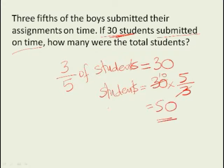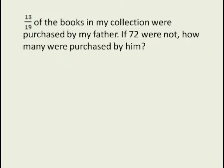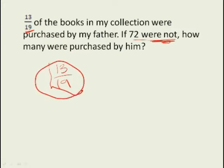13 by 19 of the books in my collection were purchased by my father. If 72 were not, how many were purchased by him? So what is the remaining fraction out of these 13 by 19? As we have done in the previous videos, if one of the things is 13 by 19, then the remaining fraction is 19 minus 13, that is 6 by 19. That's how you calculate the remaining part of the fraction.